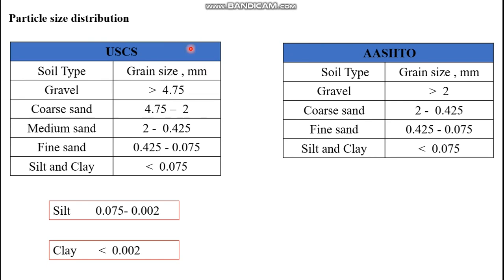The difference between the two classification systems is that in the Unified Soil Classification System, a soil is considered fine-grained if more than 50 percent passes the No. 200 sieve (0.075 mm). In the AASHTO system, there is a difference in the coarse, medium, and fine sand distribution. However, the particle size of silt and clay is relatively the same in both classification systems.